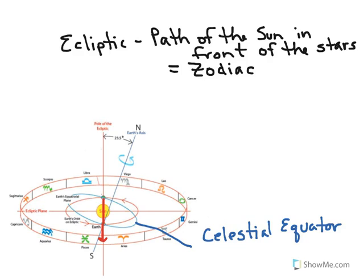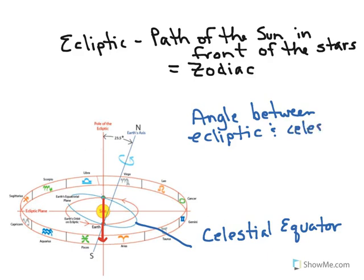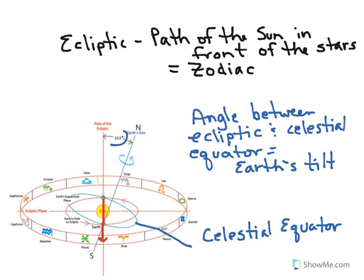And you see that it is tilted relative to the ecliptic. And the angle between the ecliptic and the celestial equator is equal to Earth's tilt. And we are tilted 23 and a half degrees. And so that angle between the two is 23 and a half degrees.